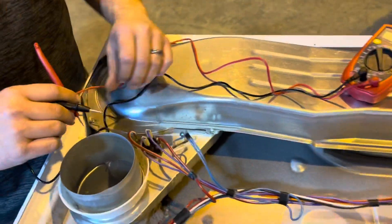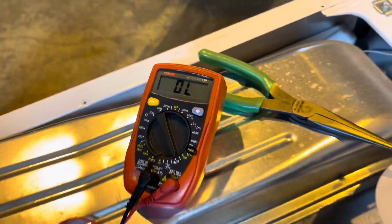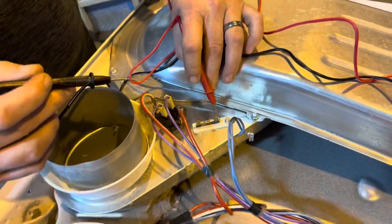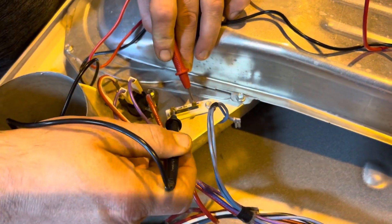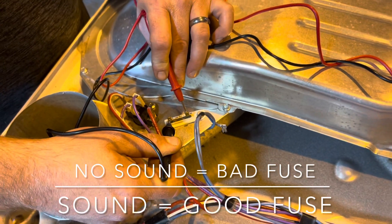The next thing you should test is the thermal fuse and the best way to test that is making sure that you're set to the continuity setting on your multimeter. So Marcus is going to touch the connectors here and we're hoping to hear a sound. Alright, we got no sound and this is a good indication that the thermal fuse is bad.